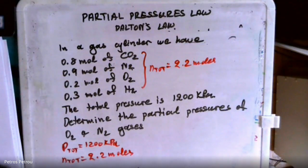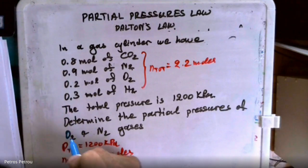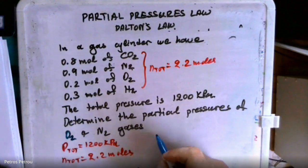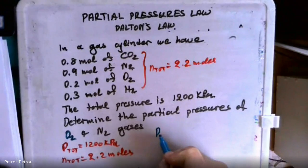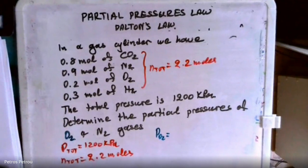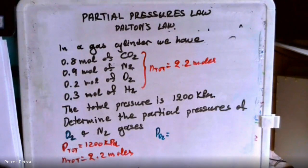Now, if I want to find, first of all, the oxygen, how would I do this? Let's put the oxygen with blue. So the pressure, partial pressure of the oxygen gas is going to have to be, as we said before, the total pressure.